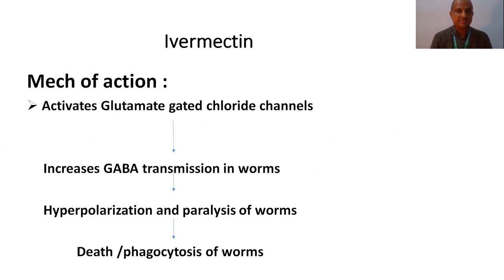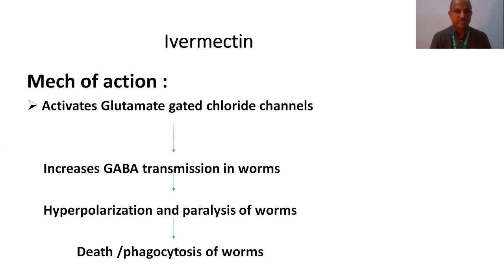Ivermectin mainly activates the glutamate-gated chloride channels. That increases GABA transmission in the worms. Due to the increased GABA transmission, there is hyperpolarization and paralysis of the worms, leading to the death of the parasite or phagocytosis of the worms, resulting in the death of the parasites.